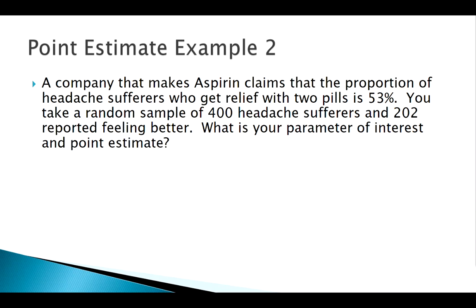Now let's look at another example with a different kind of data. Say we've got an aspirin company and they claim people's headaches will feel better 53% of the time. We take a random sample of 400 people and 202 reported feeling better. Notice this is not quantitative data — we actually have categorical data. They either say yes or no, they're feeling better, so we tally up the 202 people who felt better.